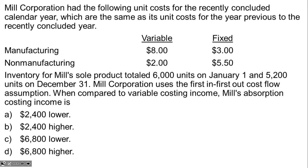Manufacturing costs are $8 variable, $3 fixed cost per unit. Non-manufacturing costs are $2 variable and $5.50 fixed. Now remember that when dealing with variable and absorption costing, it's the fixed manufacturing costs — at $3 per unit — that we're interested in.